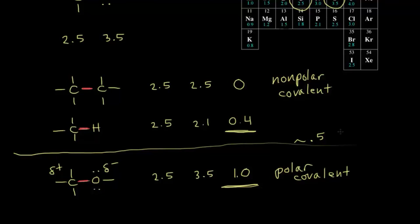I should point out that we're using the Pauling scale for electronegativity here, and there are several different scales for electronegativity, so these numbers are not absolute. These are more relative differences, and it's the relative difference in electronegativity that we care most about.